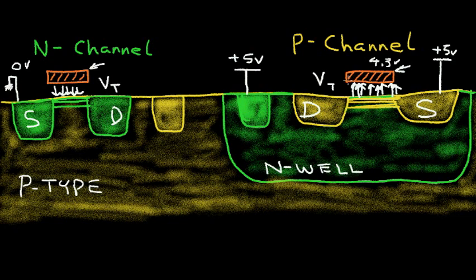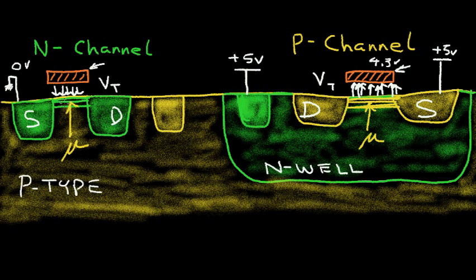The N-channel actually has a slight advantage over the P-channel because there is a mobility term in the channel region that we call mu, which was presented in a previous equation. In the N-channel, the mobility mu is greater than the mobility mu in the P-channel. So if you have a choice, you generally want to choose the N-channel transistor, since it conducts a little better — the mobility of the electrons in the channel region is better than the mobility of the holes in the P-channel transistor.